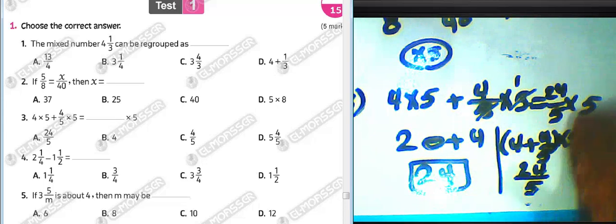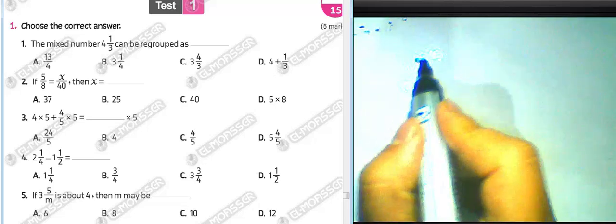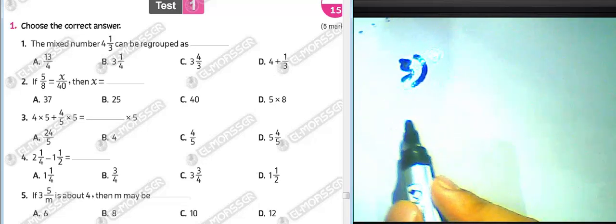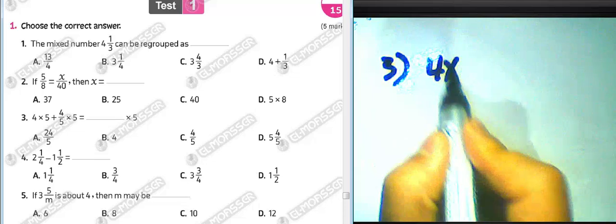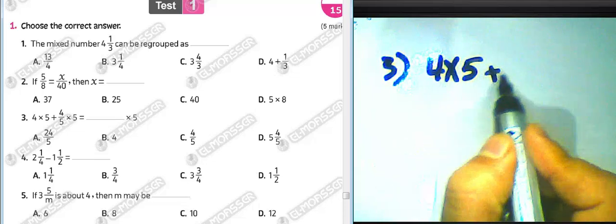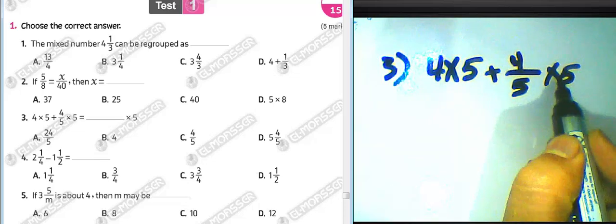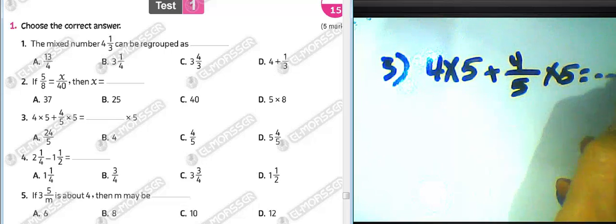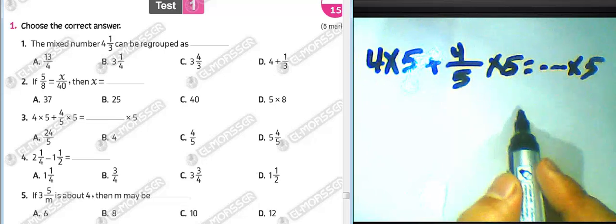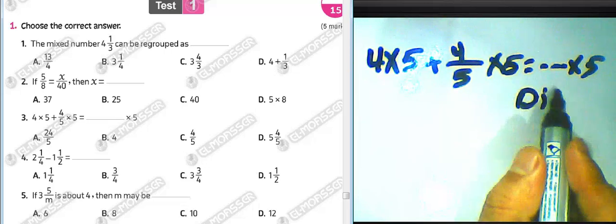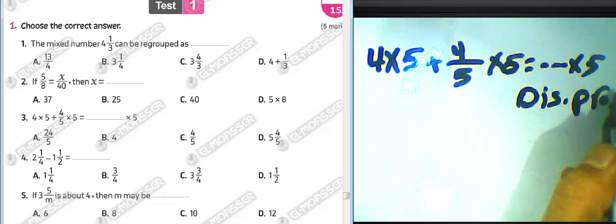I will solve question number three again so all students understand all steps. Pay attention. Four multiplied by five, plus four over five multiplied by five, equals what? We can use the distributive property here.